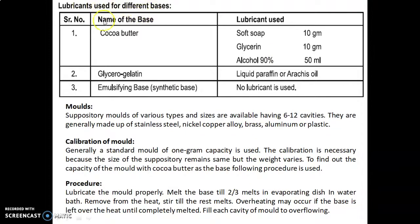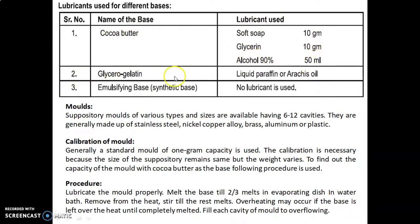Lubricants used for different bases: for cocoa butter, soft soap 10 gram, glycerine 10 gram, and alcohol 90% 50 ml are used. For glycerogelatin base, liquid paraffin or arachis oil is used as lubricant. For emulsifying base and synthetic base, no lubricant is required.